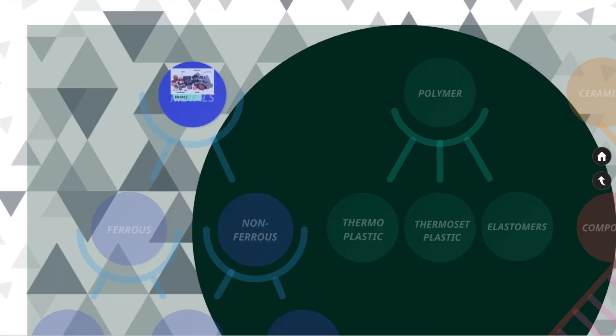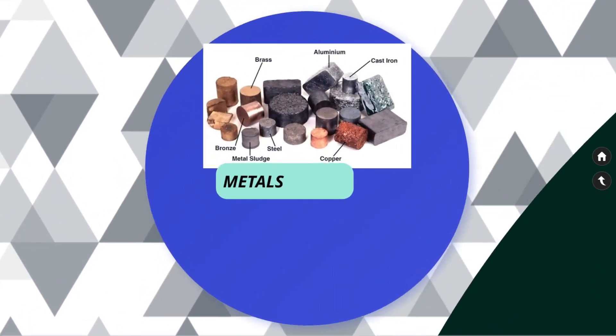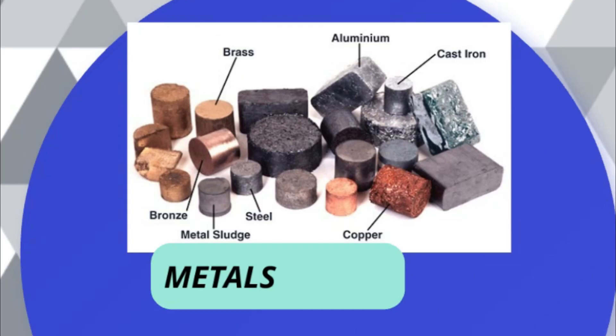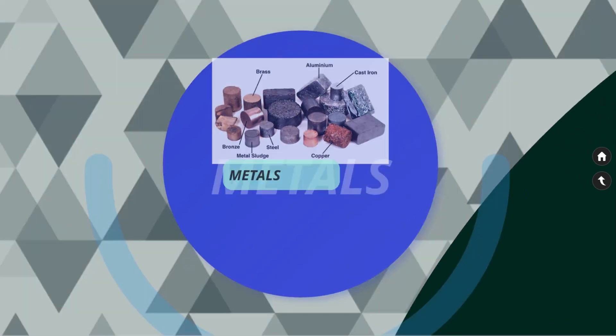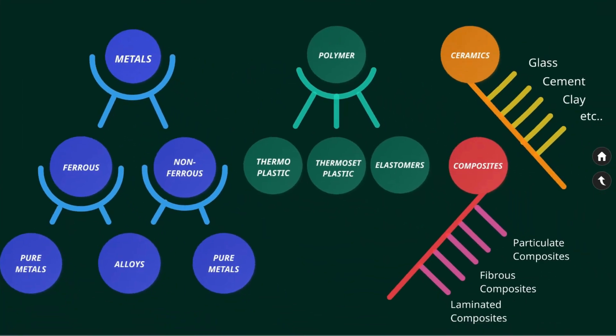Metals are the most commonly used class of engineering material. Metal alloys are especially common and are formed by combining a metal with another metal or a non-metallic material. The combination usually occurs through a melting, mixing, and cooling process. Alloying of the material is done to improve the properties of the base material.